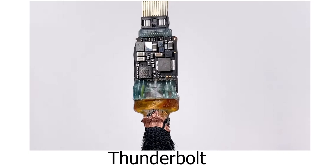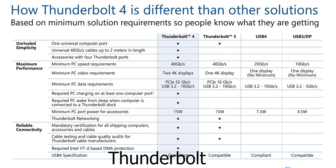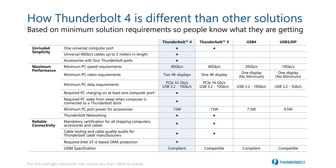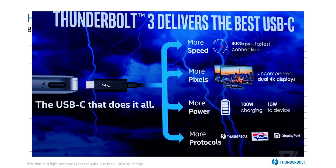How does Thunderbolt 4 compare? If USB 4 sounds great, it's because it is, but it's not the only technology out there. Thunderbolt 4 offers some of the same perks and is quickly becoming another connectivity standard to beat. It also has a USB-C connection and offers up to 40 Gbps for data transfers. Currently, you can connect up to five Thunderbolt devices to a single PC. It can also support two monitors at a time and requires a higher minimum power of 15W.